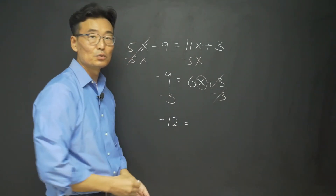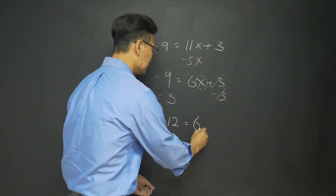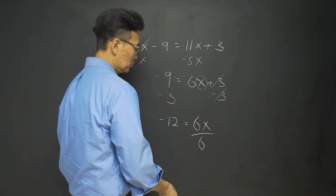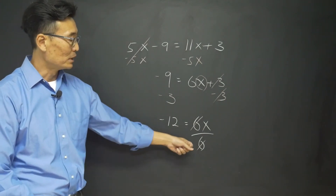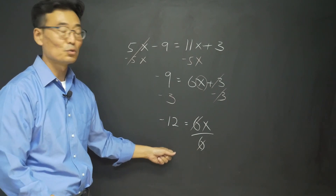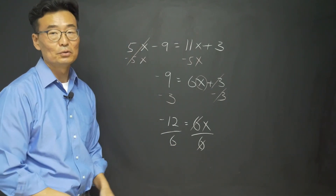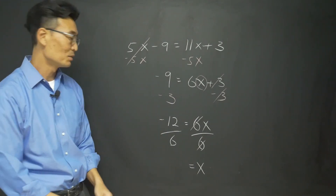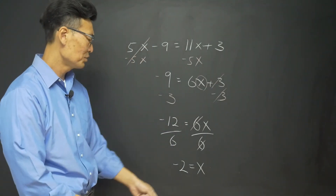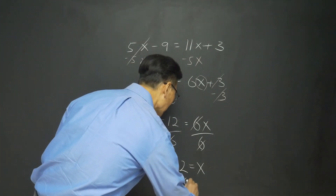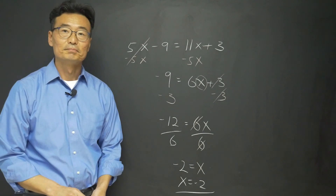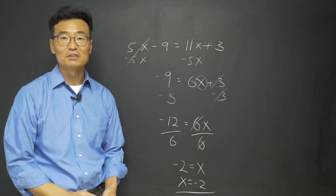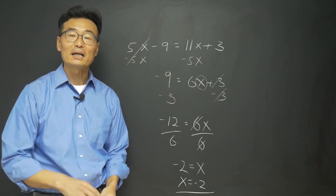Subtracting 3 from both sides gives us negative 12 on the left and 6x on the right. The last step is to divide both sides by 6: the 6 on the right cancels, leaving x, and negative 12 divided by 6 equals negative 2. So x equals negative 2. That's our lesson for Unit 1, Section 1 — solving linear equations. In Section 1.2 we'll cover more topics, so check out our next video.